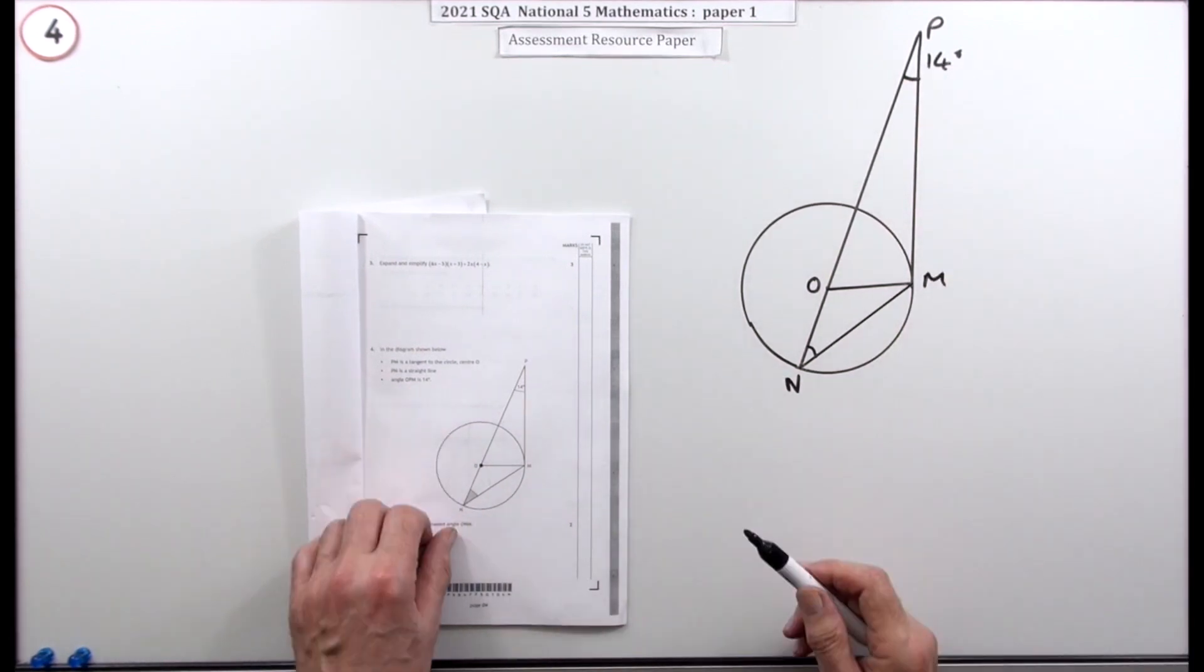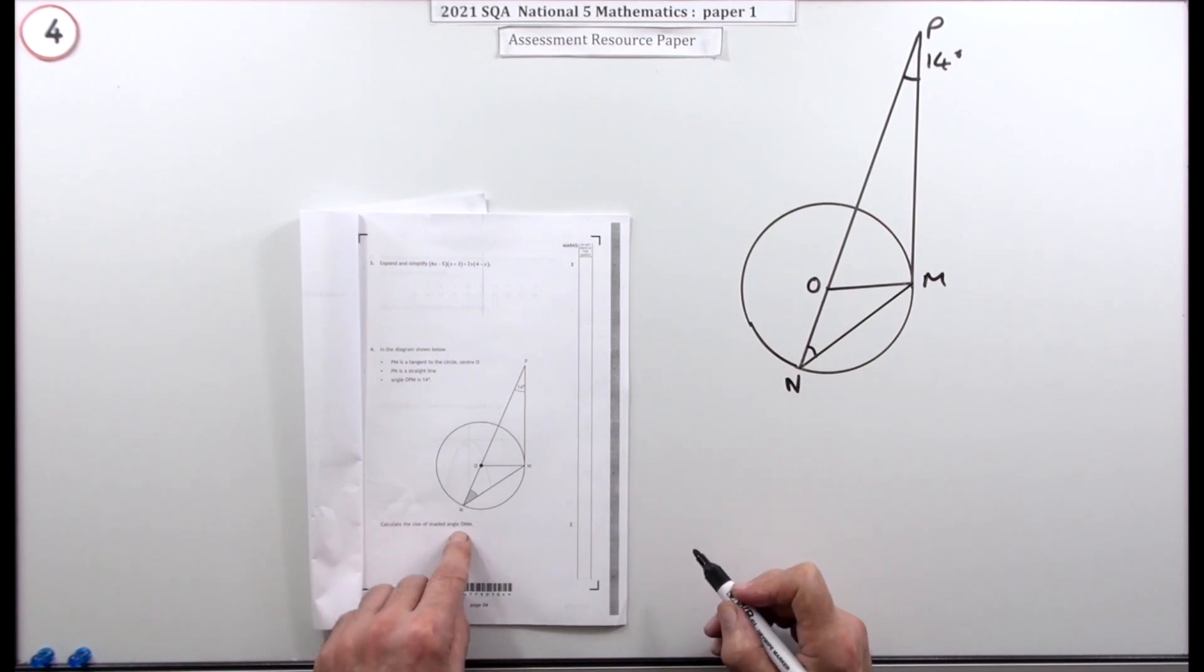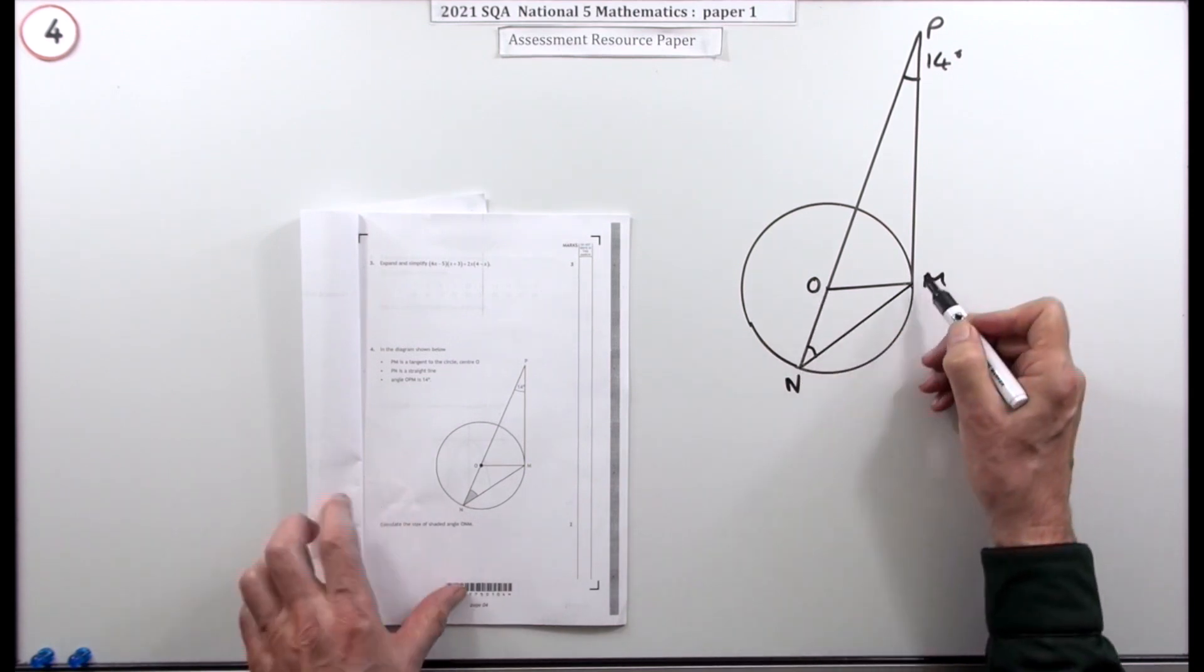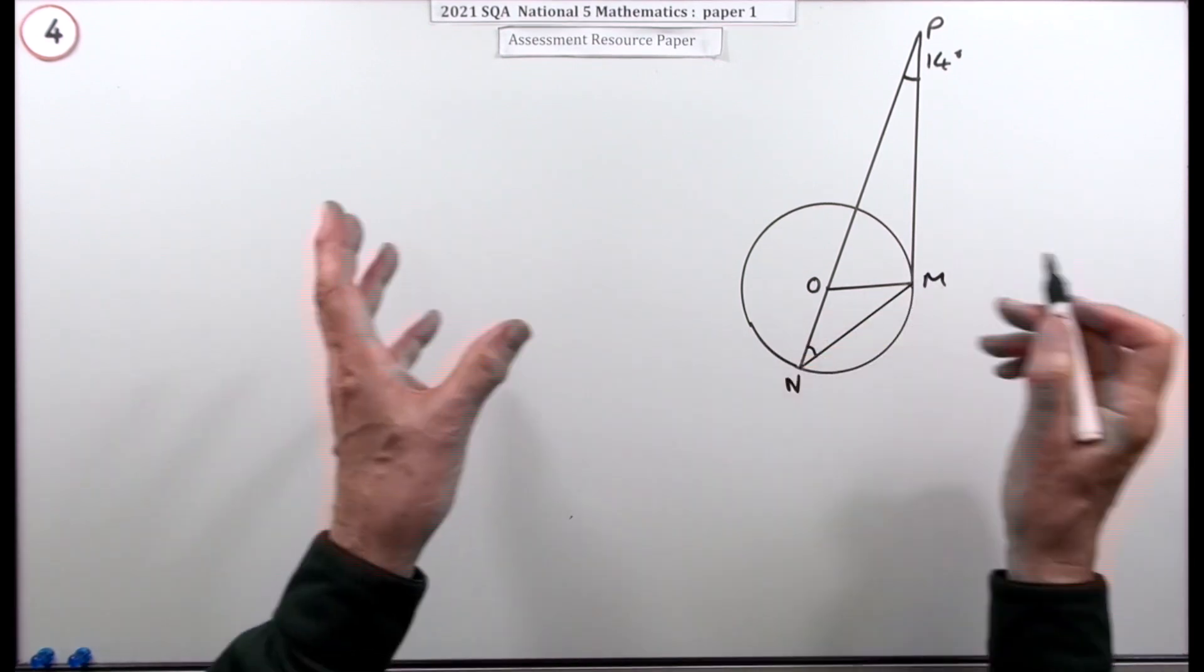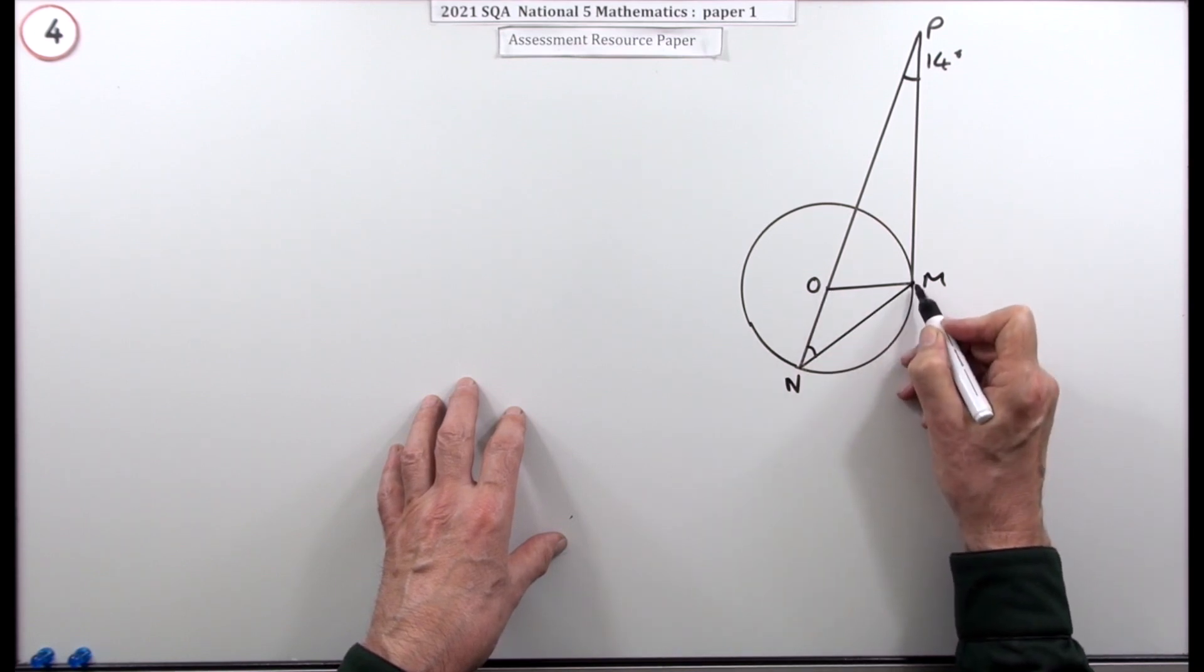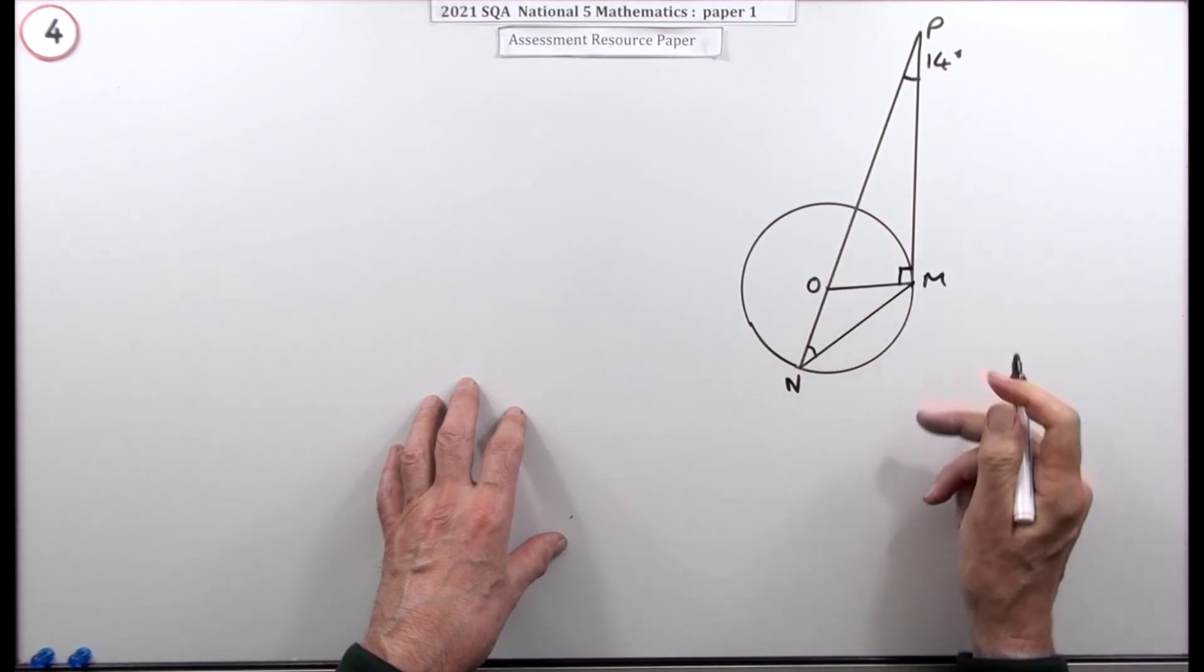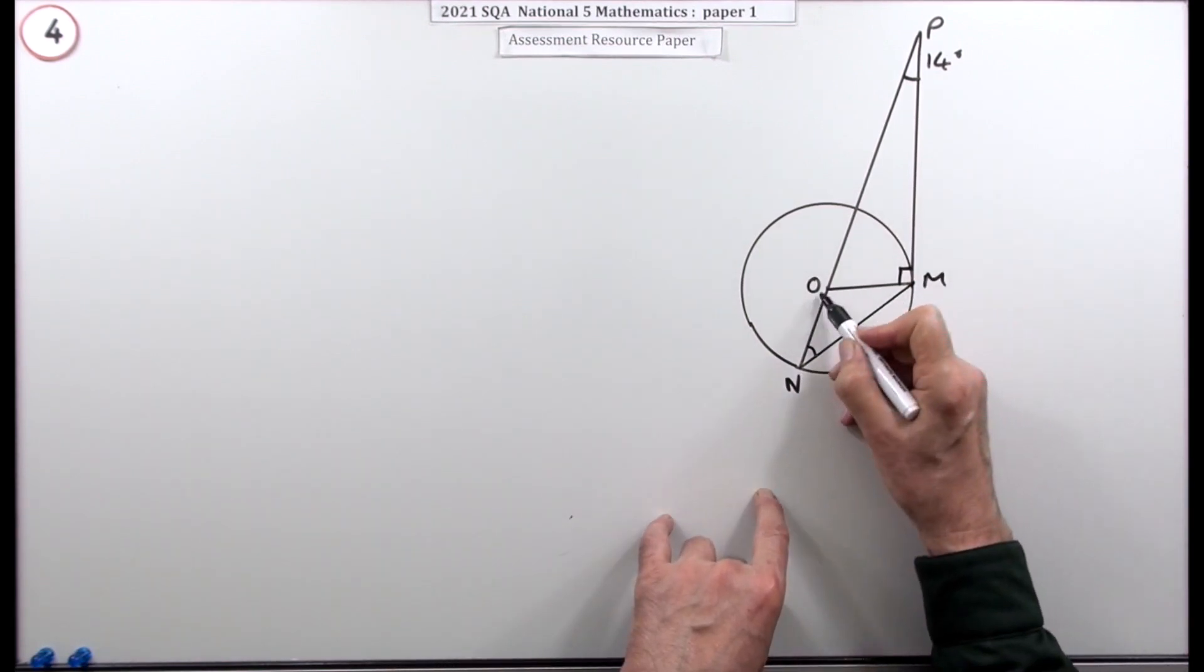The angle up here at P is 14 degrees. You have to calculate the size of the shaded angle ONM. There are two triangles. First, what kind of triangles have you got? Well, if that's a tangent and that's a radius meeting at the point of tangency, that's a right angle.